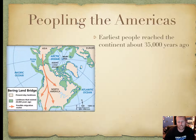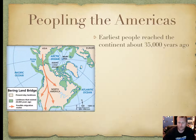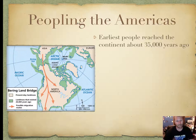People reached the continent about 35,000 years ago via the land bridge, the Bering Strait. Because of the ice age, the sea levels dropped — which is the opposite of what we're doing now, as we're going to raise them and flood California and Louisiana.